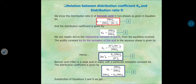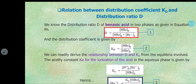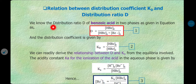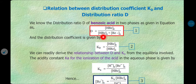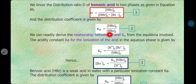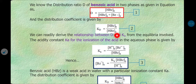Now in this lecture we will see the relation between distribution coefficient and distribution ratio. We know the distribution ratio of benzoic acid in two phases is given by D equals the concentration of benzoic acid in the ether layer (organic layer) divided by the concentration of all species in the aqueous layer, which includes benzoic acid and the benzoate anion. The distribution coefficient Kd equals the concentration of benzoic acid in the organic layer divided by its concentration in the aqueous layer.